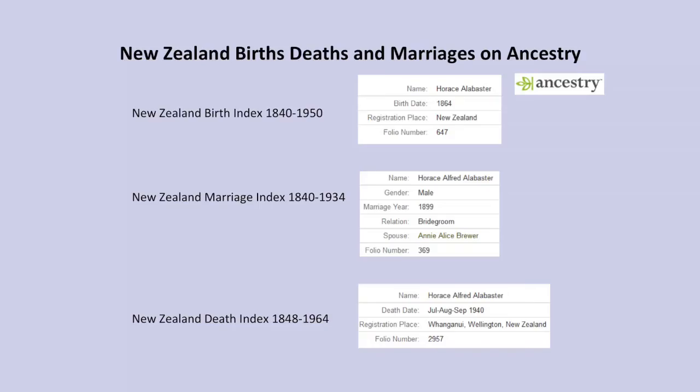Ancestry has transcribed some of these records — for births they go from 1840 to 1950, though in practice they're mostly the historical ones. Here's an example for Horace Alabaster with a birth date of 1864. This gives you the folio number, which is what you need to be able to find the district using the district keys.